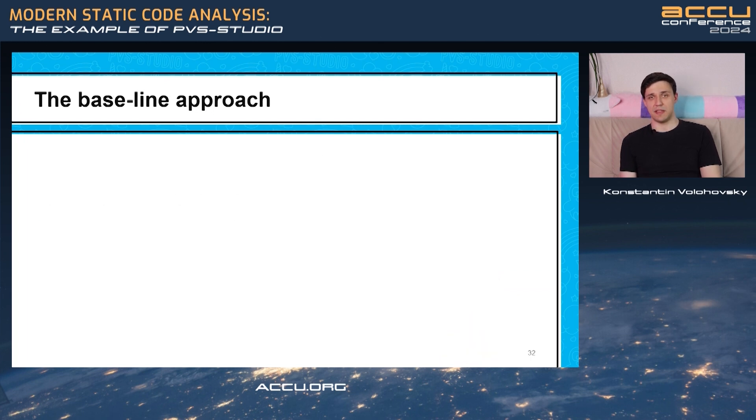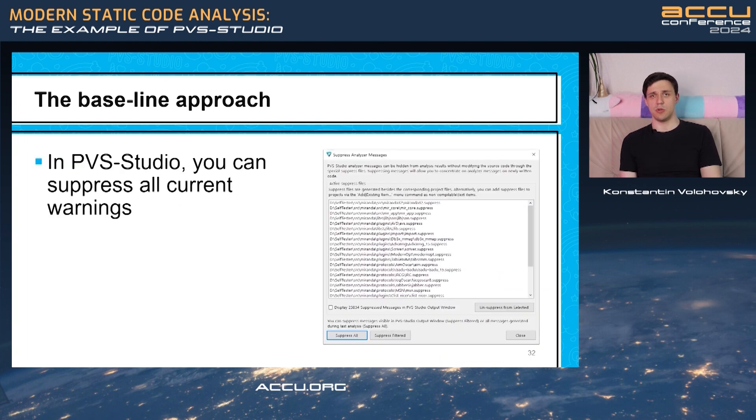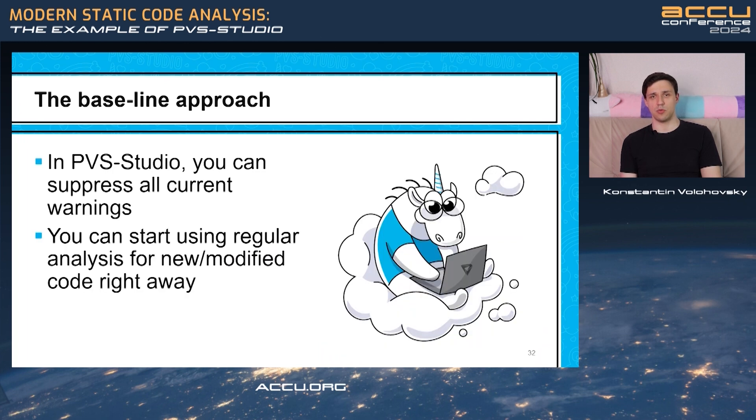The other one is the baseline approach. In PVS Studio, you can suppress all current warnings, thus enabling yourself to work with only new or modified code right away. But that doesn't stop you from fixing the older warnings if you have time to do so.